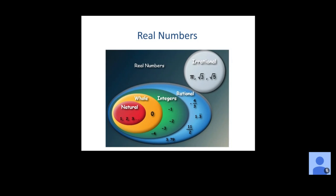Anything that can't be written as a fraction is what we call an irrational number. You can see some examples in the other bubble — pi, square root of 3, square root of 5. Those types of numbers are irrational because we can't write them as a fraction. They are completely separate from rational, but all of these numbers fall within the real number system.